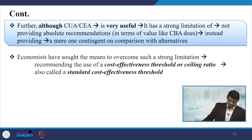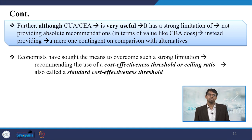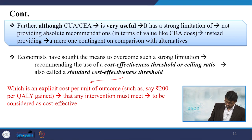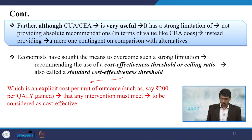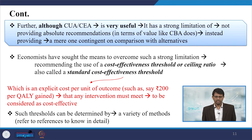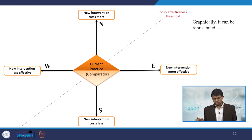Although cost utility analysis is very useful over CEA, it has a strong limitation of not providing absolute recommendations in terms of value like CBA. Instead, it provides comparisons contingent on alternatives. Economists have proposed overcoming this limitation by recommending the use of a cost-effectiveness threshold — also called the ceiling ratio or standard cost-effectiveness threshold — which is an explicit cost per unit of outcome, such as 200 rupees per quality-adjusted life year gained, that any intervention must meet to be considered cost-effective.